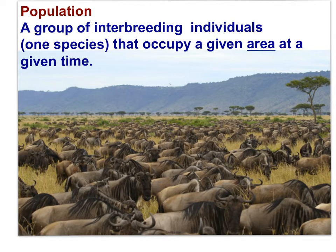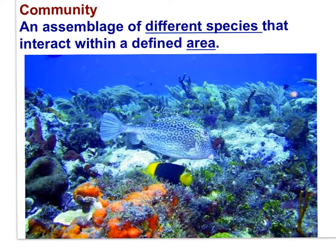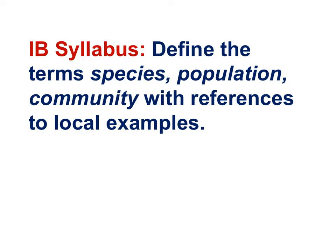A population is a group of interbreeding individuals — one species that occupies a given area at a given time. A community is an assemblage of different species that interact within a defined area. The IB syllabus asks that you define the terms species, population, and community with references to local examples.